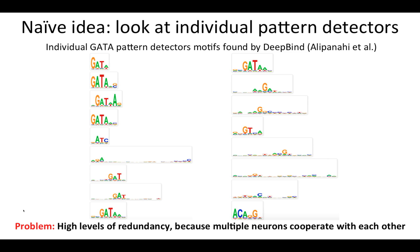What are the existing approaches to try to extract patterns learned by the deep learning model? A naive idea is to just look at individual pattern detectors — that's individual convolutional filters. This was done in the DeepBind paper, which predicted transcription factor binding using sequence, just like our setup. Here is a visualization of the convolutional filters learned for the model that predicted the binding of the GATA protein, and you can see just by eye there are very high levels of redundancy. This is actually very normal for deep learning, because in practice multiple neurons are going to cooperate with each other to predict the binding of a particular transcription factor. Deep learning models learn distributed representations.